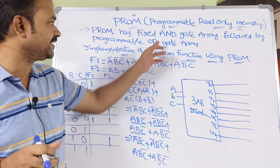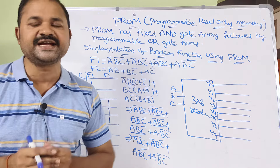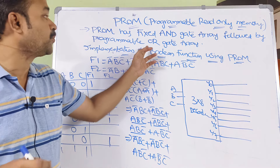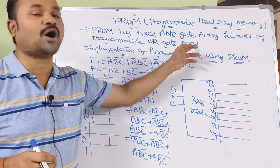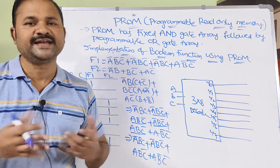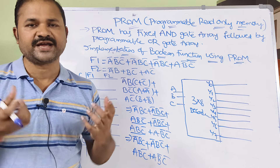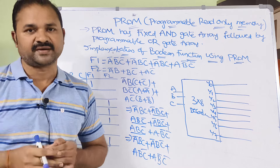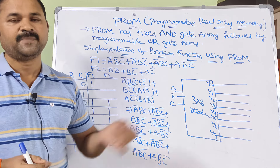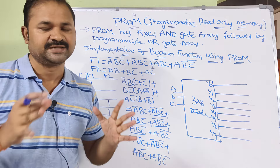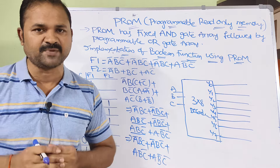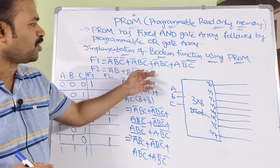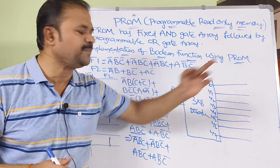For implementing the collection of AND gates, we use a decoder followed by a programmable OR gate array. The OR gate array means we will have a collection of OR gates, and we can do some programming on the OR gates, but AND gates are fixed — they are not programmable. Now let's take an example: implementation of boolean functions using PROM.